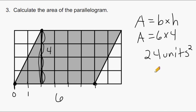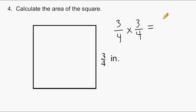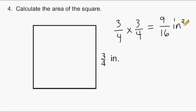On to the next problem. To calculate the area of the square, we multiply the length of one side by itself, since the length and the width of any square are identical. We take 3 times 3 to get 9 for our numerator, and 4 times 4 is 16 for our denominator. This fraction cannot be simplified, so our answer is 9 sixteenths square inches.